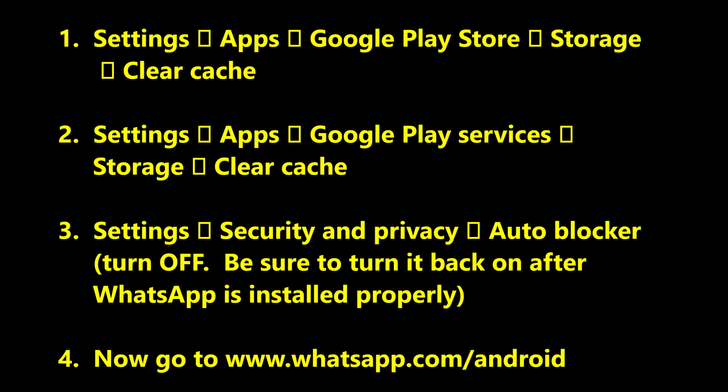Then go back to Settings, Security and Privacy, and turn your Auto Blocker off. Remember to come back and turn it back on after WhatsApp is installed.